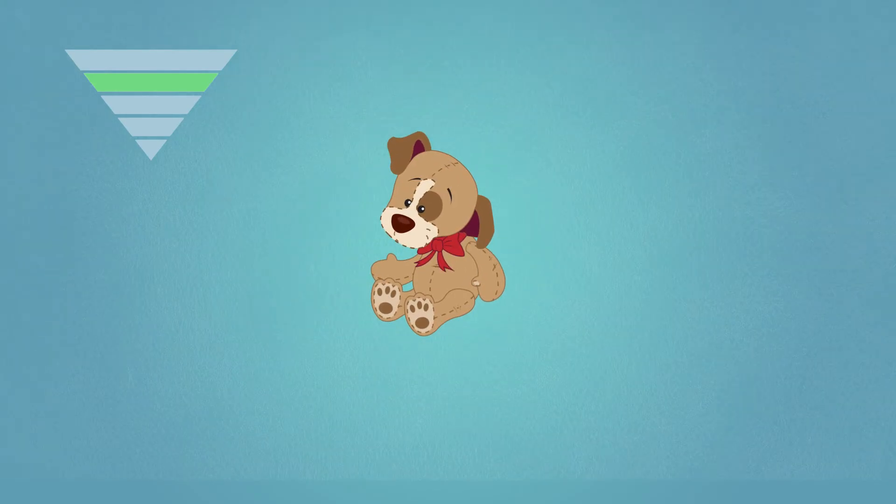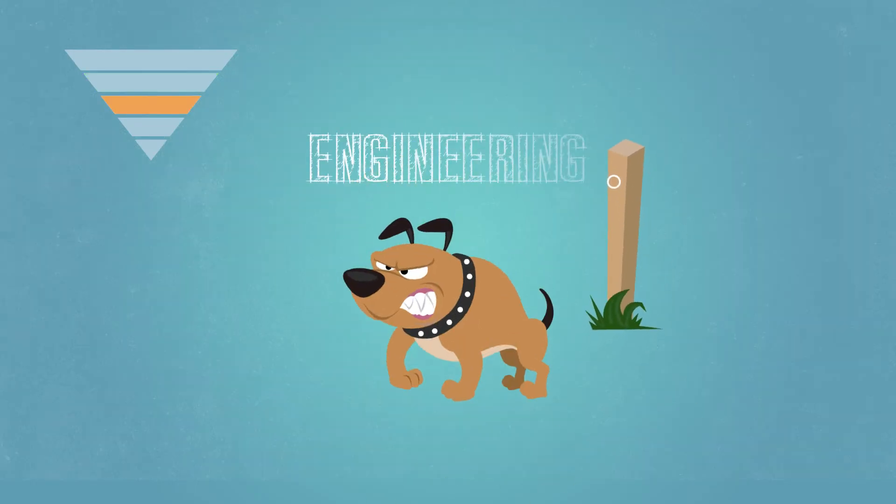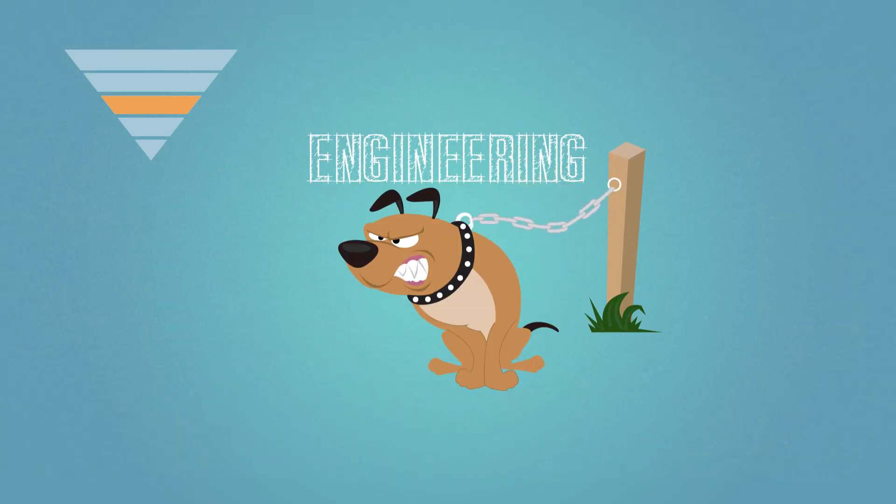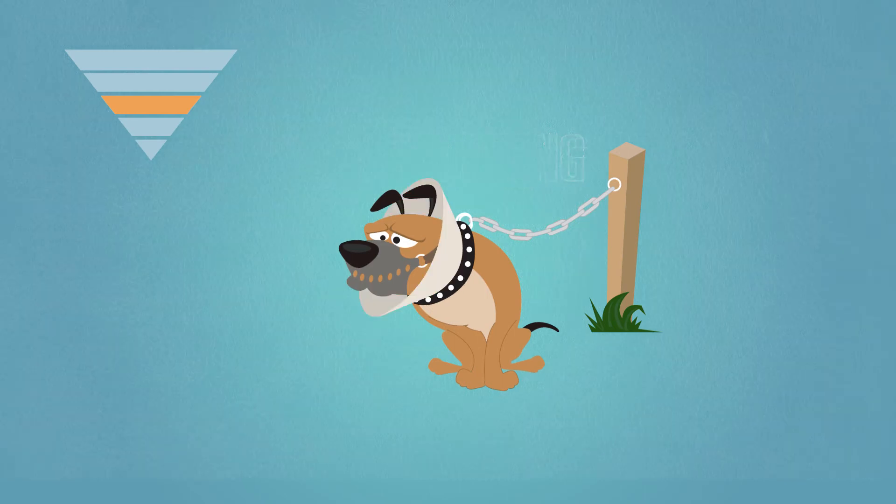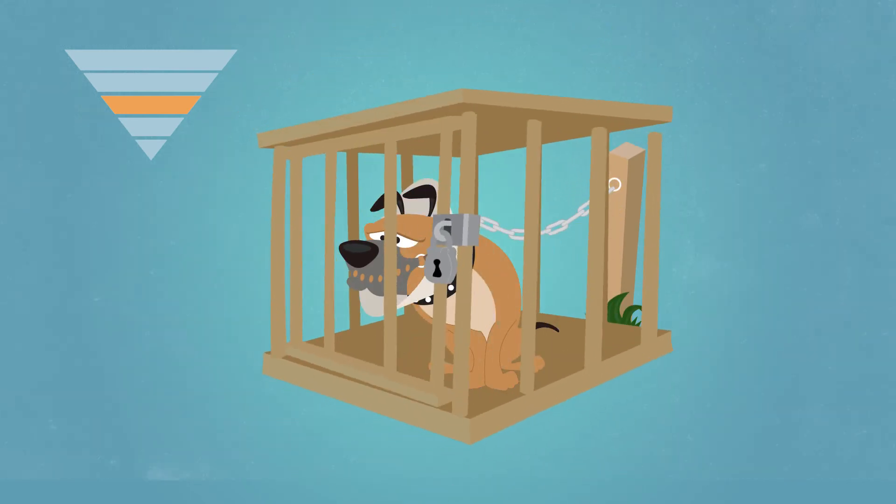The third most effective means of controlling hazards is engineered controls. These do not eliminate hazards, but rather isolate people from hazards.